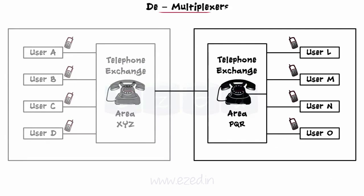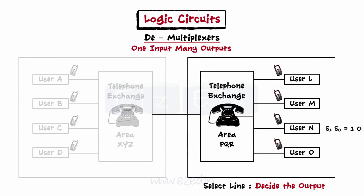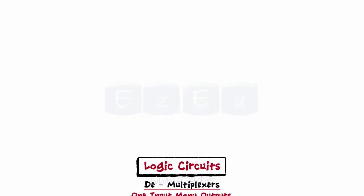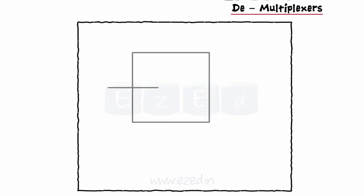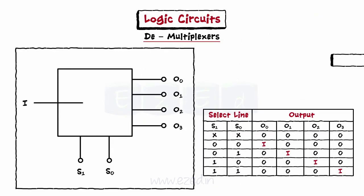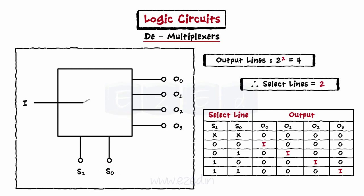Opposite to multiplexers is the demultiplexer or DEMUX. It has one input and many outputs, and depending upon the select line values, the input line is connected to any one of the output lines. In a DEMUX, we also have 2^N output lines and N select lines. Consider a 1-to-4 DEMUX: since 2 raised to 2 equals 4 output lines, we have two select lines where N equals 2. For S1 and S0 both equals 0, the input is connected to line O0. For S1 equals 0 and S0 equals 1, the input line is connected to O1, and so on. Thus it performs a demultiplexing action.